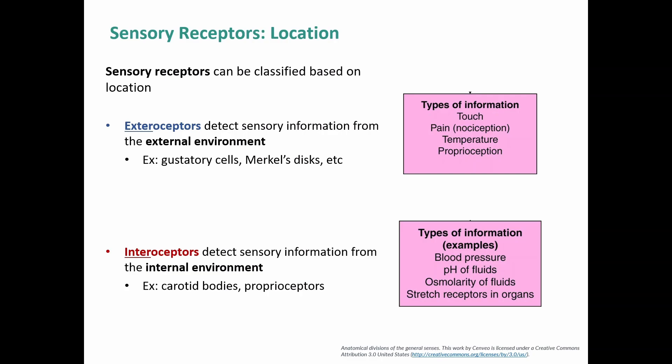We can also classify sensory receptors based on location of the stimulus — as exteroceptors or interoceptors. Exteroceptors detect sensory information from the external environment, such as gustatory cells for taste or Merkel's discs for pressure and touch. Touch, pain, temperature, and proprioception can all be exteroceptors. Interoceptors detect sensory information from inside the body — for example, carotid bodies detecting changes in blood pH.